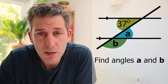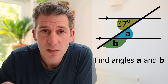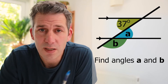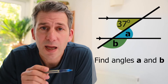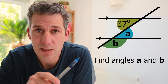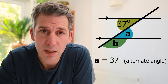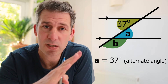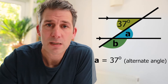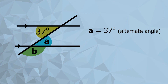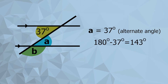In this second question we've been asked to find two missing angles. We've got 37 degrees and we have to find angles A and B. Angle A is the same as the 37 degree angle because it's an alternate angle — it's alternate because it's on opposite sides of that diagonal. So that's 37 degrees. Then angle B is on a straight line with A, so those two add up to 180 degrees. Subtracting 37 from 180 gives us 143 degrees — that's angle B.